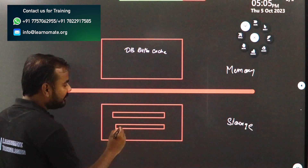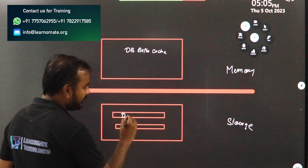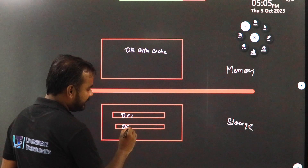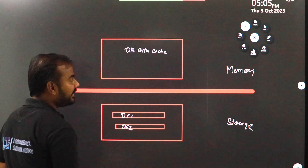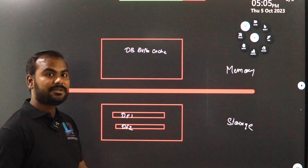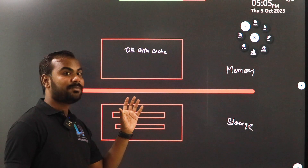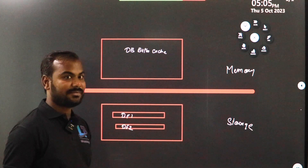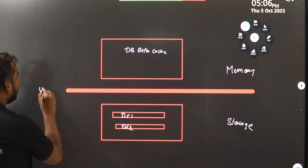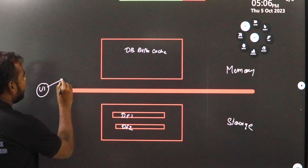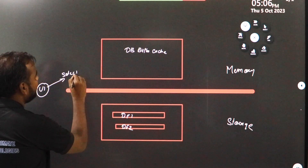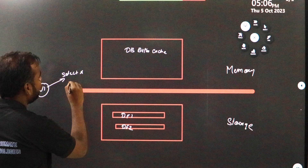Below, we have your data files — let's say data file 1 and data file 2. This is going to play a very important role in terms of performance. Let's say there is a user 1 and he is firing a command like SELECT * FROM table_name.